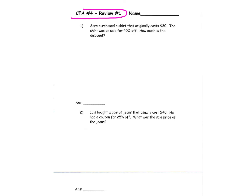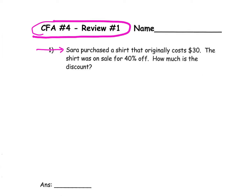Let's take a closer look at problem number one. Problem number one states: Sarah purchased a shirt that was originally $30. The shirt was on sale for 40% off. How much was the discount? When they ask for how much, they're talking about a dollar amount, and they want to know the discount — the amount that was saved. You need to find the dollar amount associated with the savings, not the sale price.